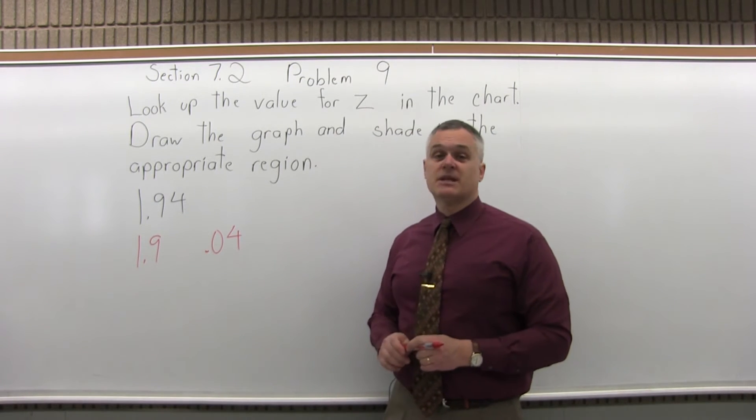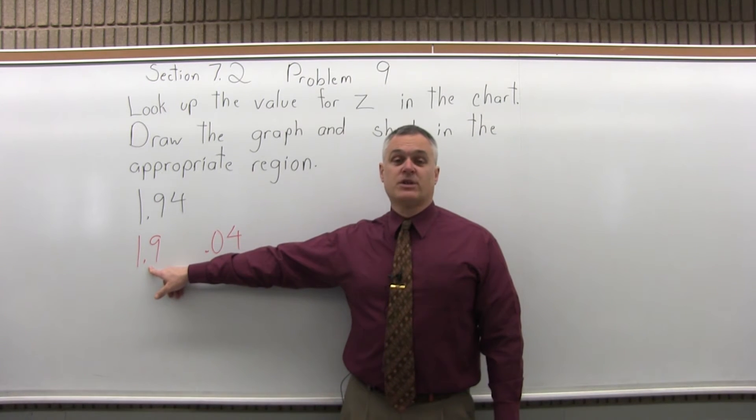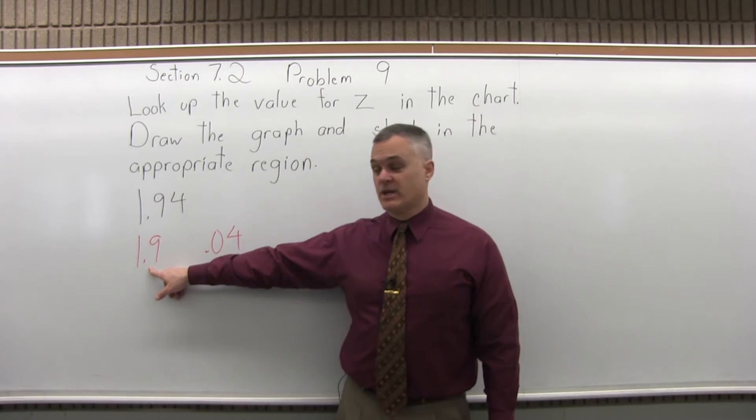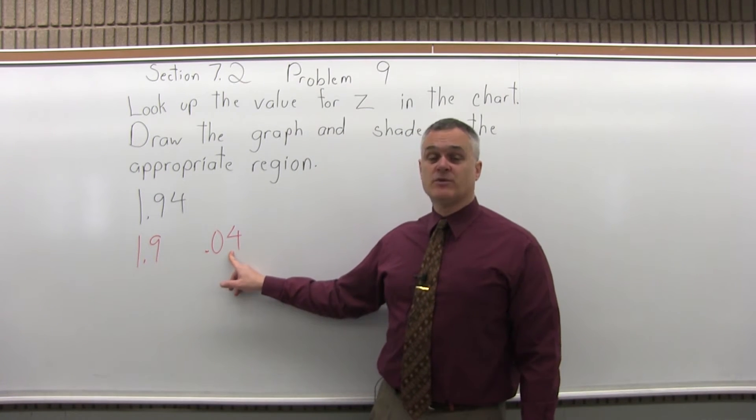And that brings us to step four. So in step four, the digit from the left, the 1.9 will tell you what row of the chart to look in. And the digit from the right with the .0 in front tells you what column of the chart to look in and you'll see where they intersect.